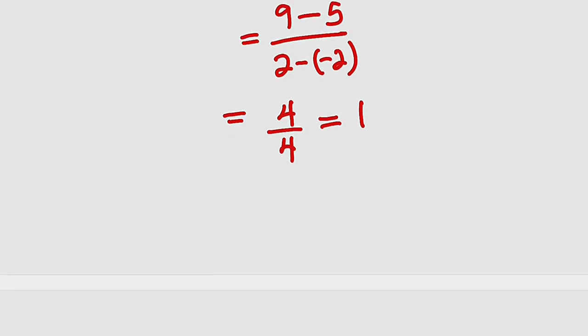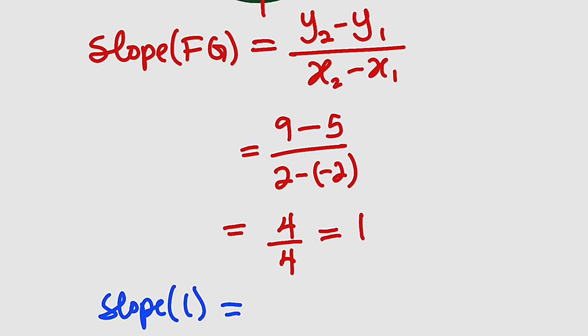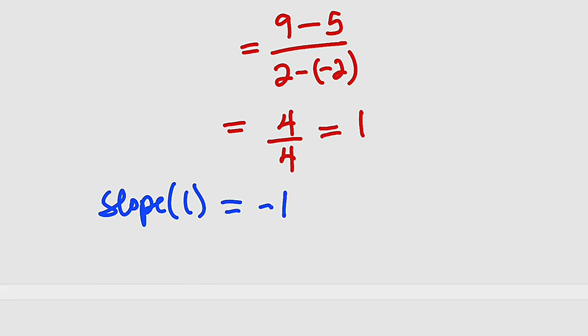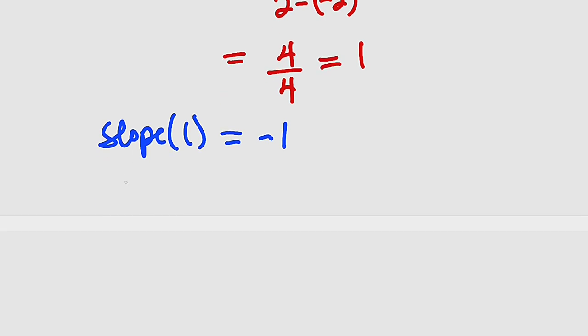So what about the slope of the line L? We say that they are just the negative reciprocal of each other. What is the reciprocal of 1 is still 1, and negative of the reciprocal will be -1. So how can we obtain the equation of the line L? It is just y minus y1 equal to m, which is the slope of the line, multiplied by x minus x1 in point-slope form.